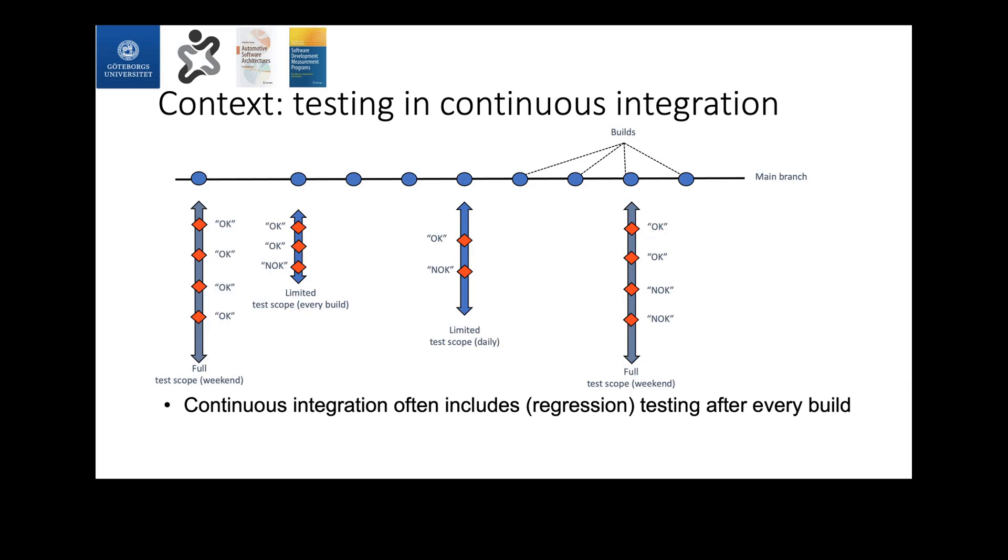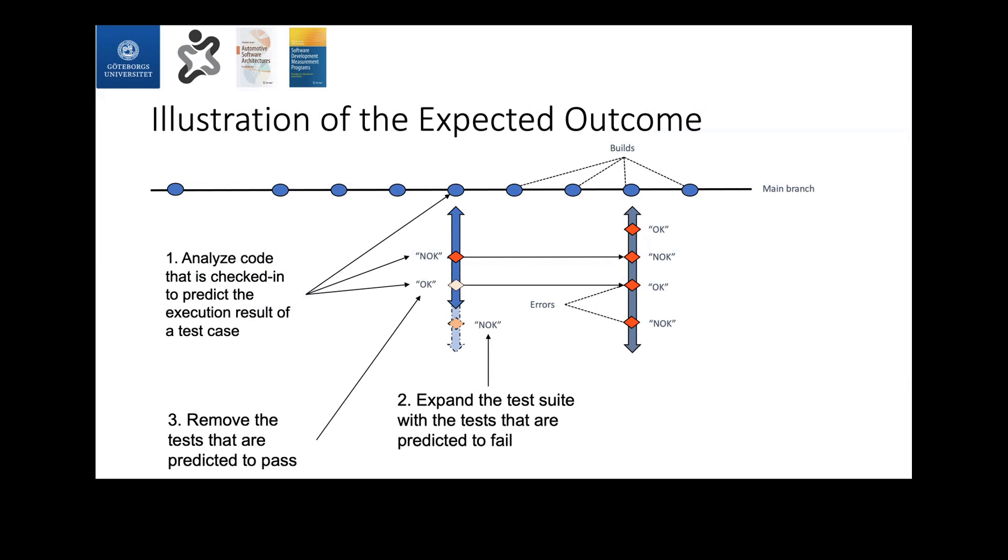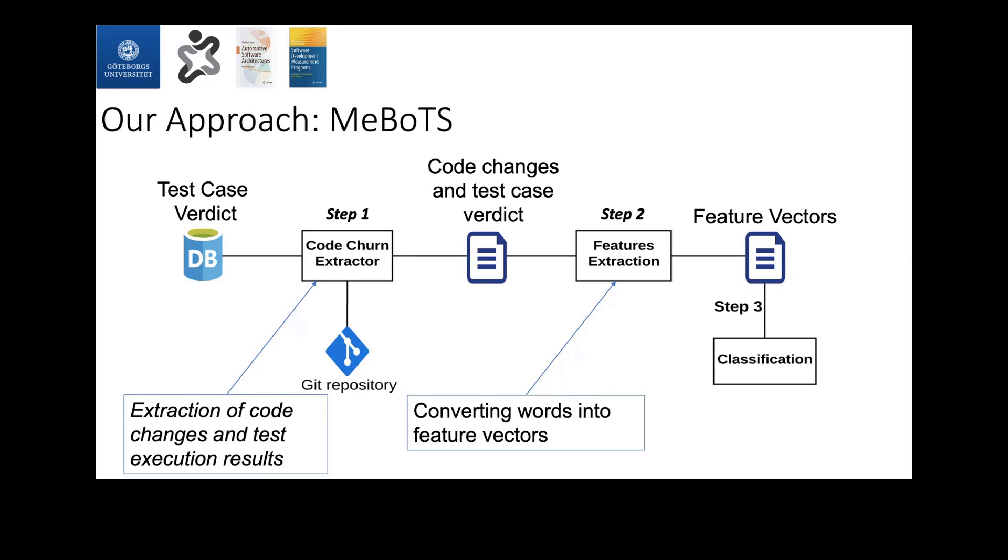The idea is that we want to include in this subset of test cases, test cases that have high fault revealing capabilities, such that we identify faults as soon as they're introduced, and we don't wait until later stages. If we could analyze the code that were previously pushed by developers and try to find a statistical dependency between that code and the execution result of test cases that were run against the code, then maybe we can increase the chances of finding an effective subset of test cases in those minimal suites and include test cases that will fail and exclude test cases that will pass.